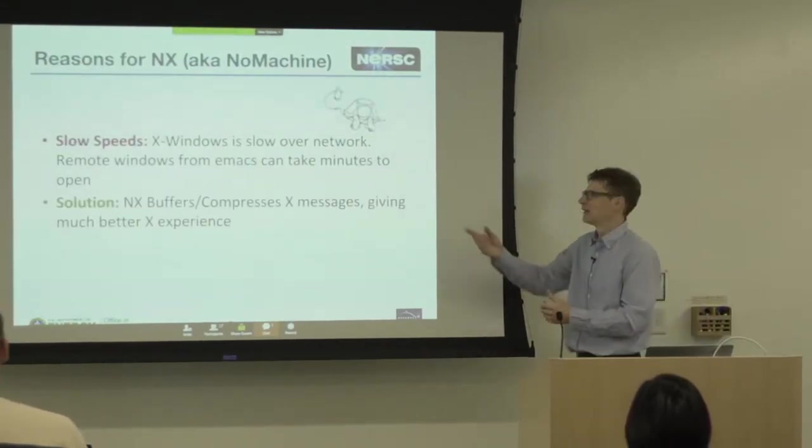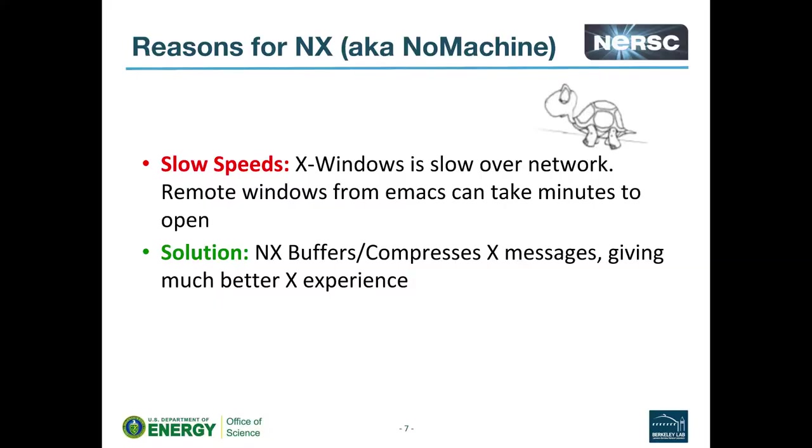So reasons for using it. The first and biggest one already, X windows over a network is really slow. If you've tried to start even Emacs on a not lightning fast network from a remote machine, you'll have noticed that it can take anywhere between a few seconds and several minutes to draw the window up. So NX deals with this by buffering and compressing the X messages, making for that much tighter, less talkative protocol and giving a better experience.